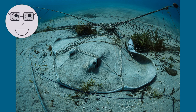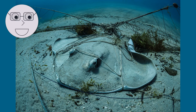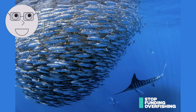Overfishing is a significant threat to marine biodiversity. The depletion of fish populations can have a cascading effect on entire ecosystems, disrupting food chains and causing imbalances. The visuals show examples of overfishing such as large fishing trawlers and empty fishing nets.